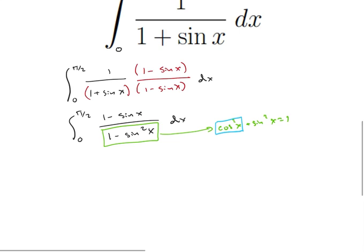So this simplifies to now we have the integral from 0 to pi over 2 of 1 minus sine of x divided by cosine squared of x.